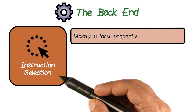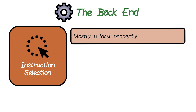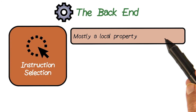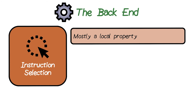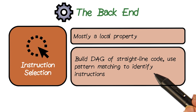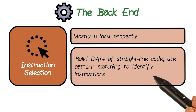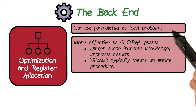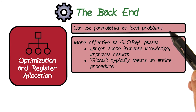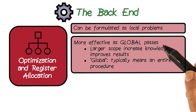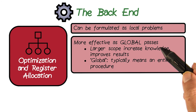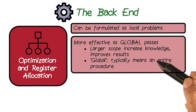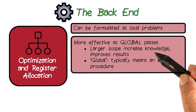Going back to these two different parts of the backend: instruction selection is mostly a local property. We look at each IR instruction and generate code from it. In some cases, we may build a DAG or a tree out of IR operations and then pick CISC instructions that cover multiple IR operations using pattern matching. Register allocation can also be formulated as a local problem for keeping values in registers for short durations, but it is much more effective as a global problem — keeping values throughout the duration of a function call or large parts of it.